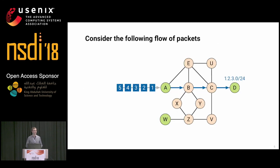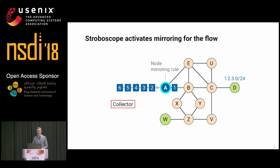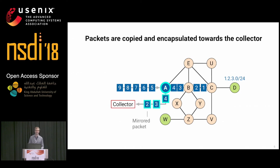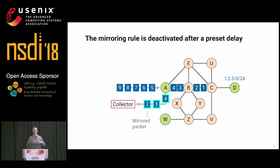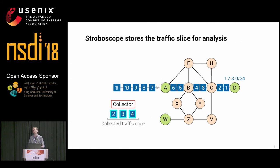Consider the same network again — you have a set of packets about to enter it, and they get forwarded by the ingress router. With Stroboscope, we have a concept of a node mirroring rule. A collector somewhere instructs the router: if you see any packet towards the 1.2.3.0/24 prefix, please make a copy of it, encapsulate it, and send it to us. Router A sees a stream of packets for the blue prefix, duplicates them, and sends them to the collector for analysis. We can also give the mirroring rule an expiration date — mirror traffic for this amount of time — after which the router stops mirroring. The traffic still flows in the network, but we stop receiving copies. That's what we call a traffic slice: a small set of packets mirrored by a router for a specific flow.